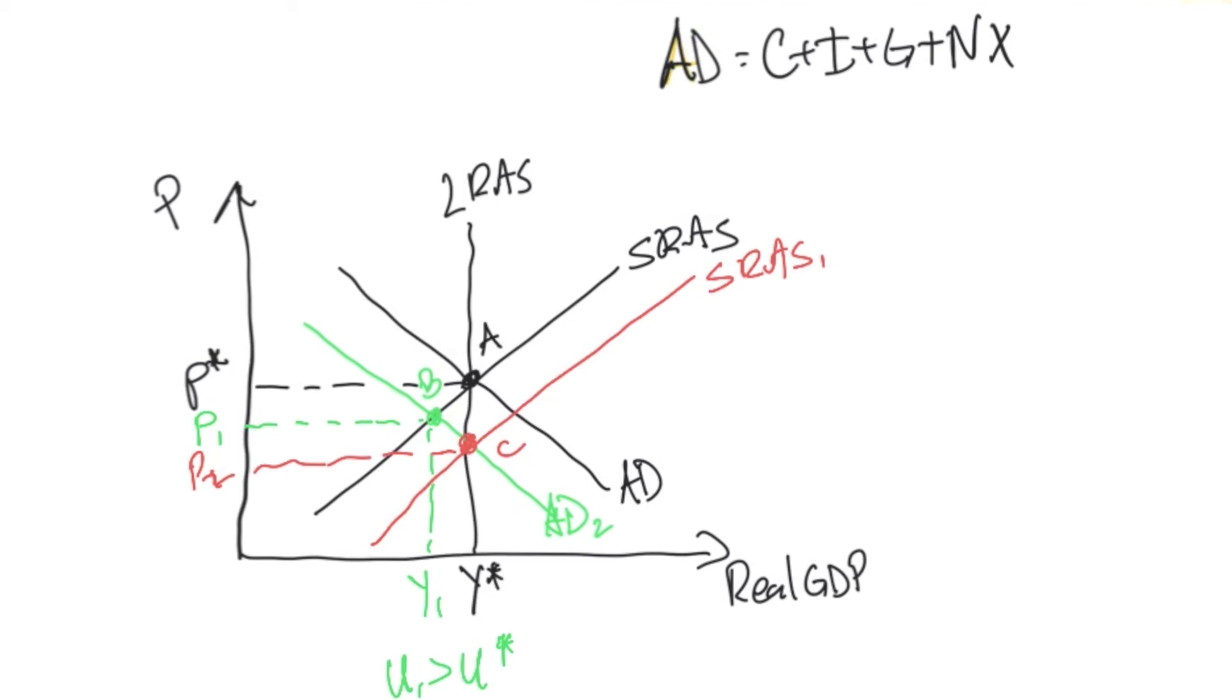From P1 to P2, all the other prices in the economy, namely wages, were able to adjust. We're able to produce more and return to our production of Y star.